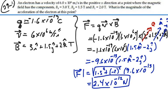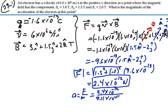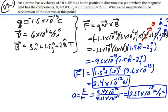So that's the magnitude of the force on this particle. If we want to find the acceleration, acceleration equals force divided by mass. That would be 2.4 times 10 to the minus 12 divided by the mass of an electron, 9.11 times 10 to the minus 31, and that gives us 2.63 times 10 to the 18 meters per second squared. So that is the magnitude of the acceleration on this electron.